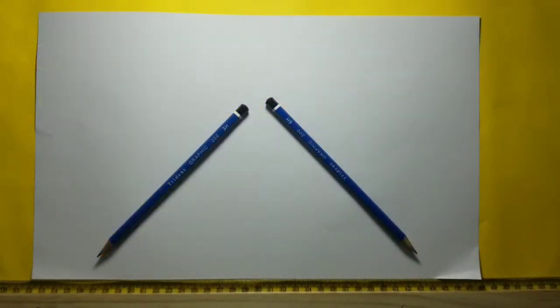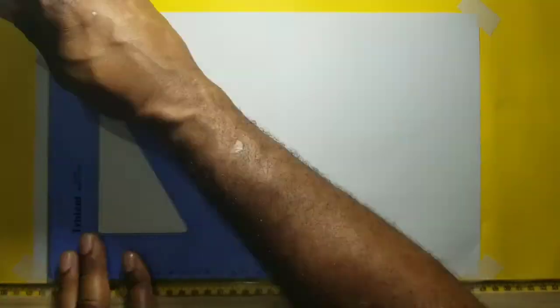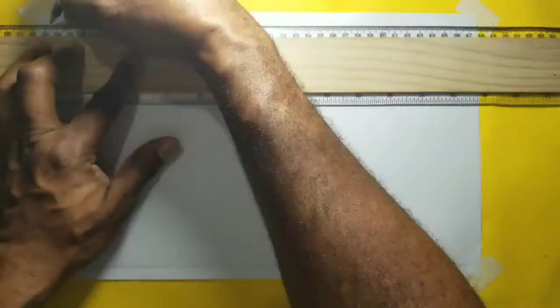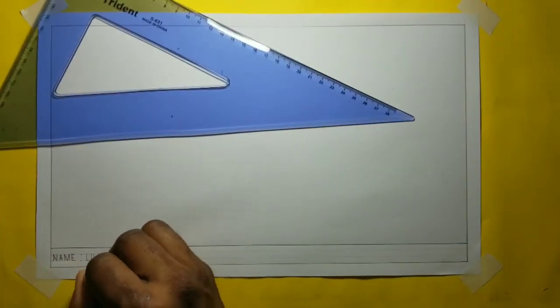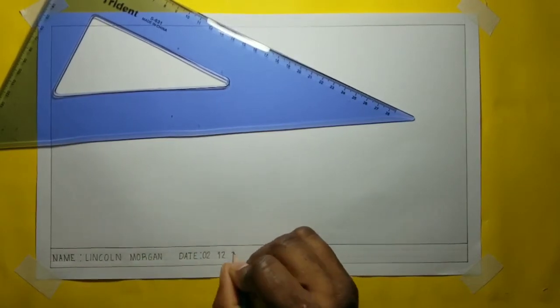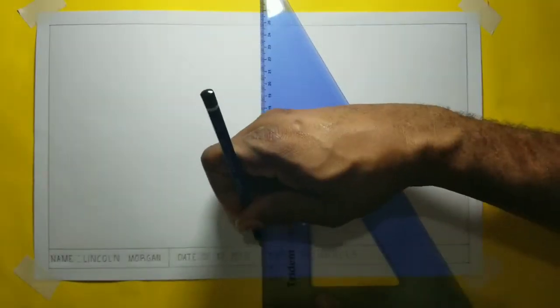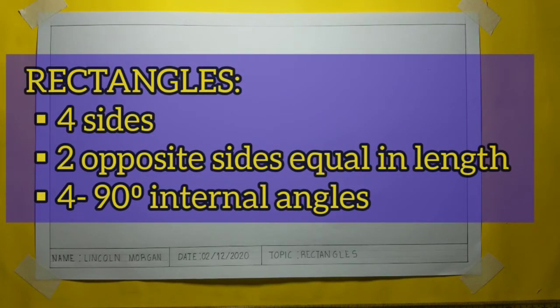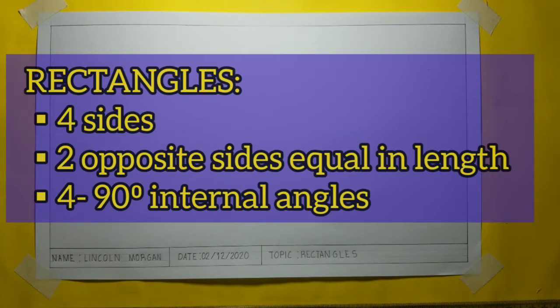I will now go ahead and border my paper. A rectangle is a quadrilateral that consists of four sides. Two sides are always equal in length — two long sides equal in length and two short sides equal in length. The rectangle also consists of four internal angles that are 90-degree angles.